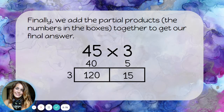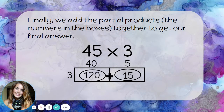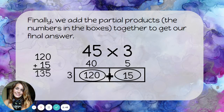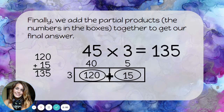Finally, we just need to add the partial products — those numbers in our boxes — back together to get our final answer. So we have 120 plus 15, which is 135. 45 times 3 is 135.